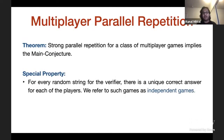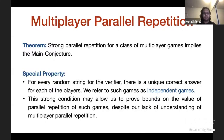Our class of multiplayer games satisfies a very special property: for every random string of the verifier, there is a unique correct answer for each of the players. We refer to such games as independent games. We believe this strong condition may allow us to prove very strong parallel repetition for such games, despite very limited known bounds on multiplayer parallel repetition.